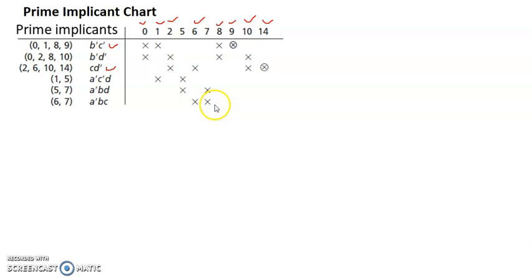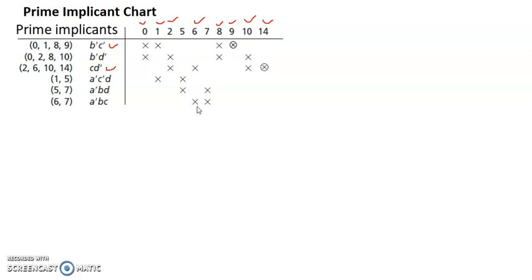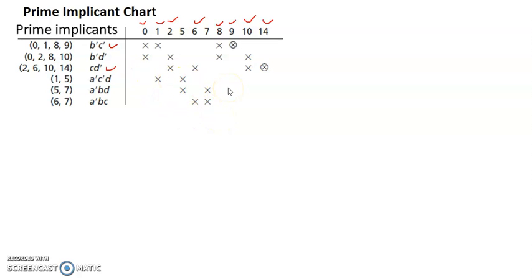This problem looks very simple, but many times we end up with multiple cross marks for each of the minterms, making it very tedious to choose which one. Also, many problems can have multiple solutions — what are all those solutions? Sometimes the question asks to find all minimum possible solutions. At that time we go with the Petrick method.